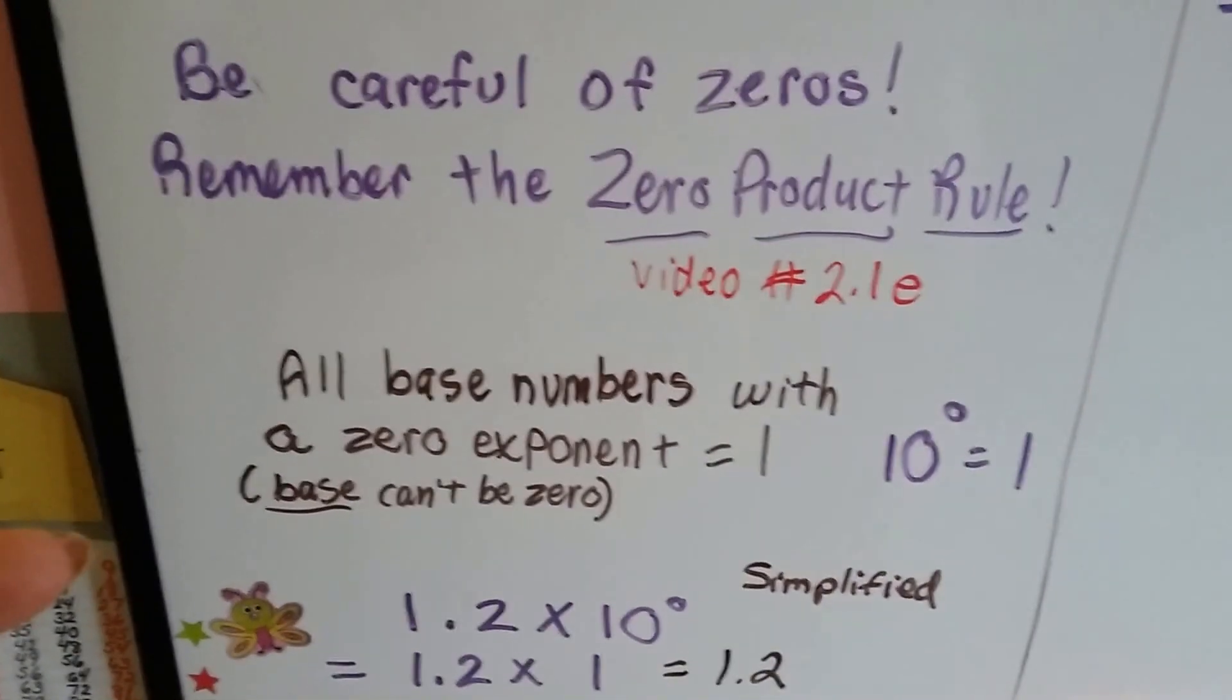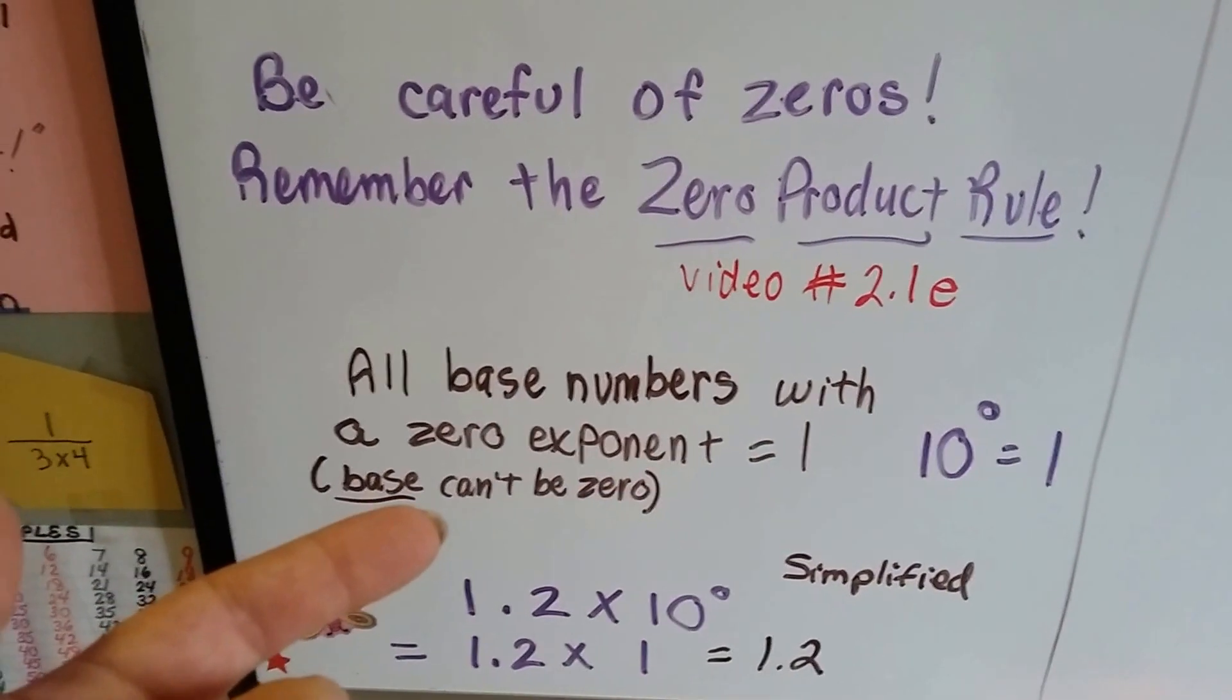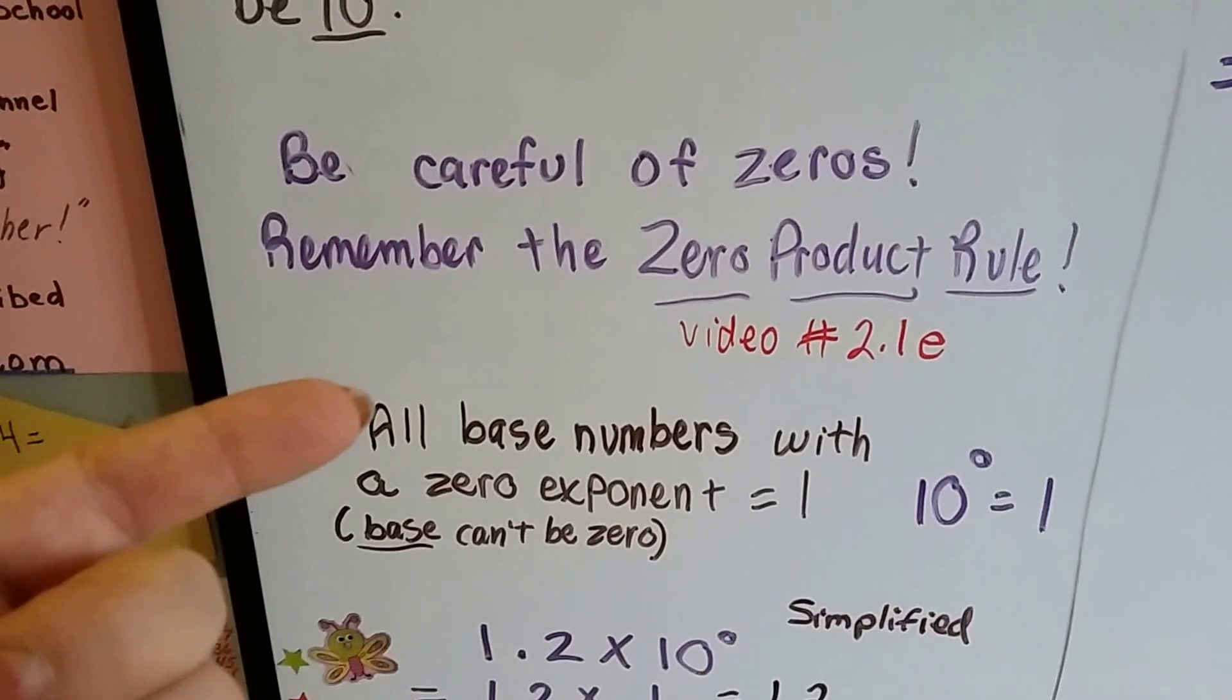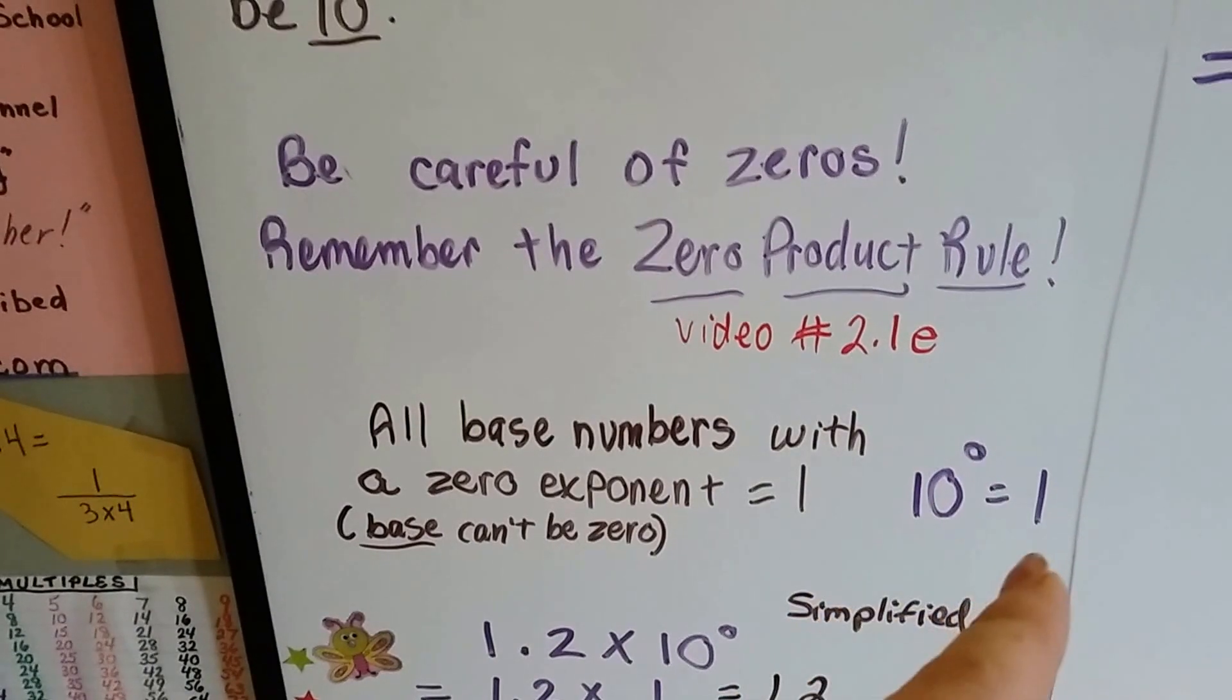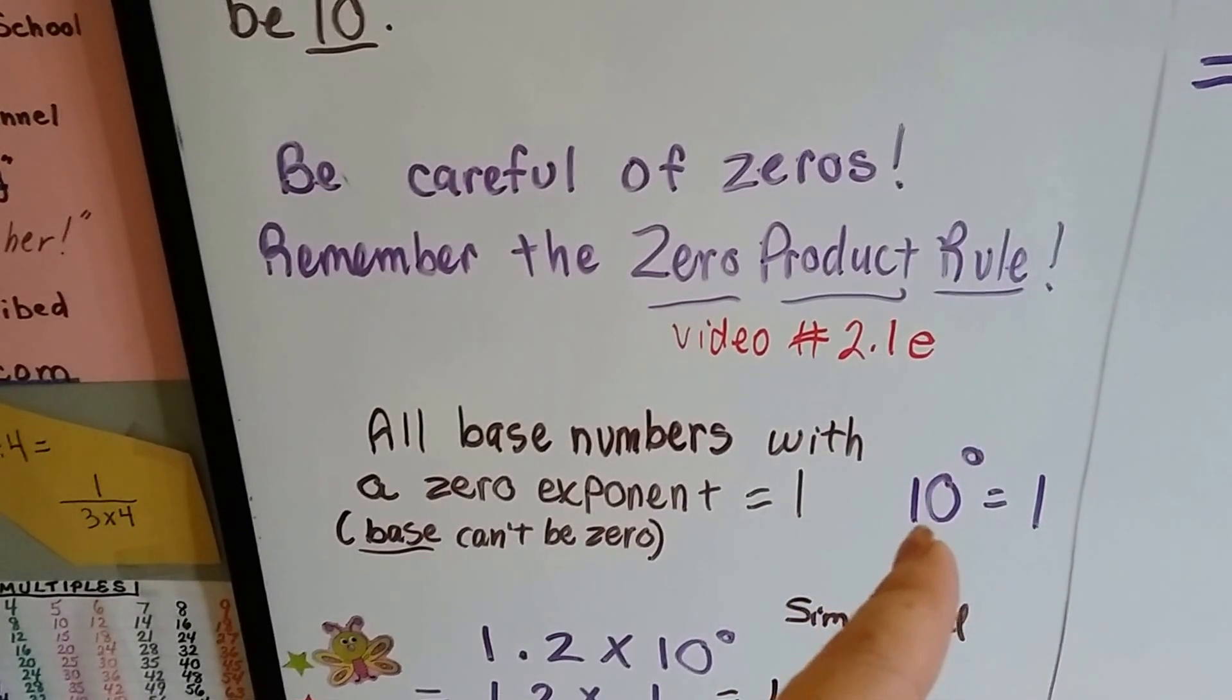All base numbers with a zero exponent are going to equal a 1. The base can't be zero, just like in the product and quotient rule. If we have 10 to the zero power, it's just a 1. That's what that means. Any number that's got a zero exponent is a 1.